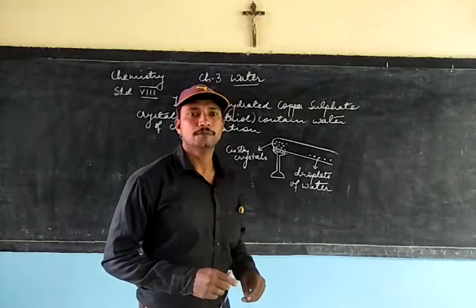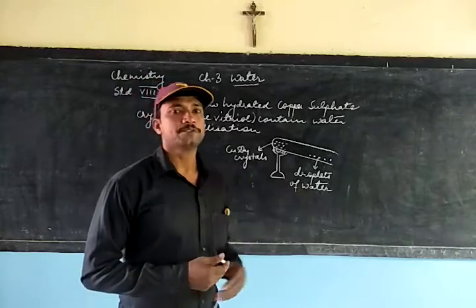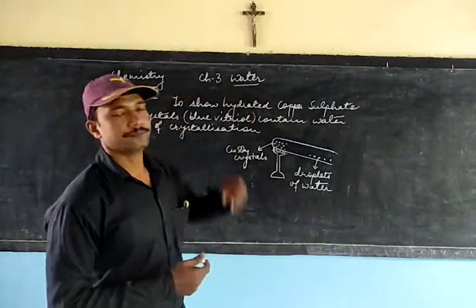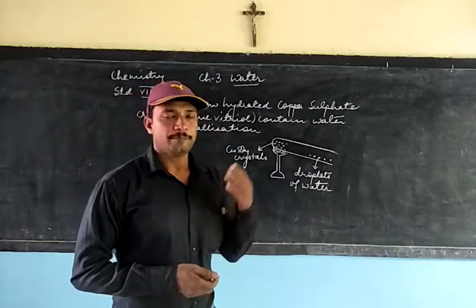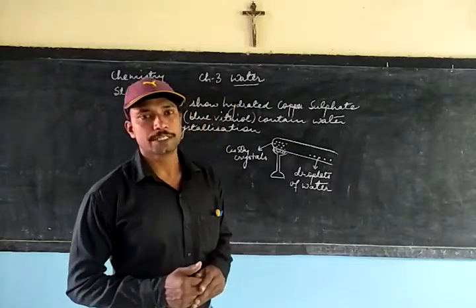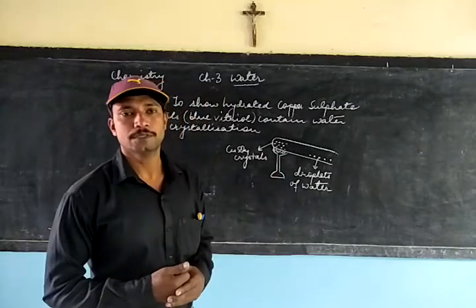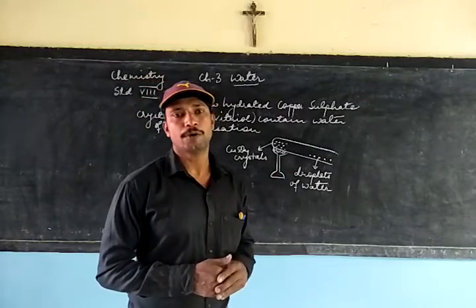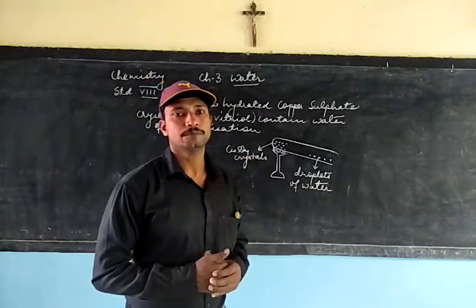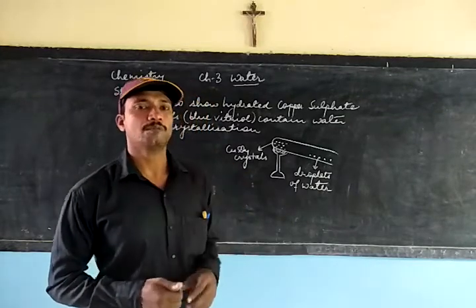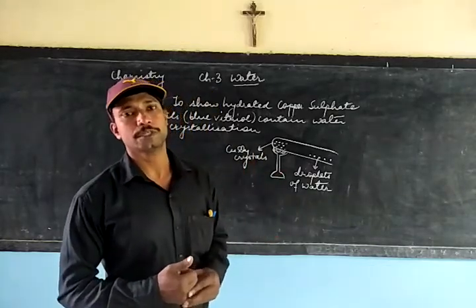Good morning students. We have started water of crystallization from Chapter 3, the chapter is Water. Water of crystallization is a certain number of water molecules associated with a compound or a salt, which becomes an integral part of the compound. As long as these water molecules are present, they give a certain shape and certain color to the crystal.